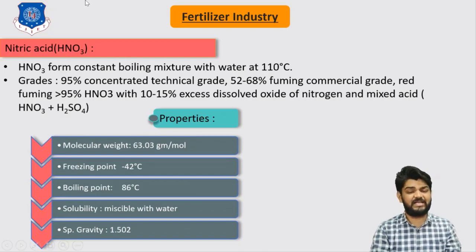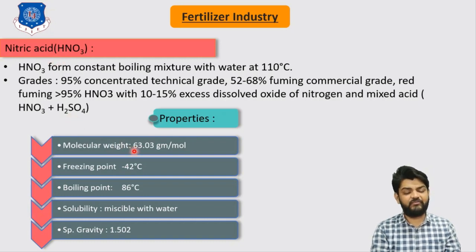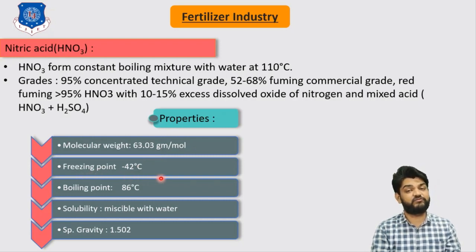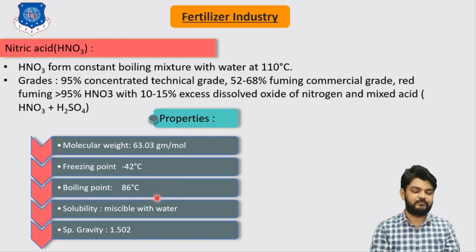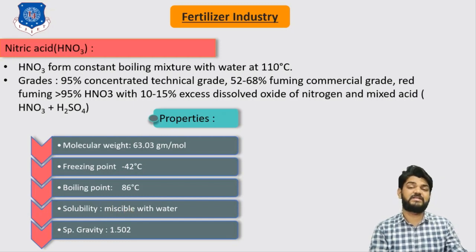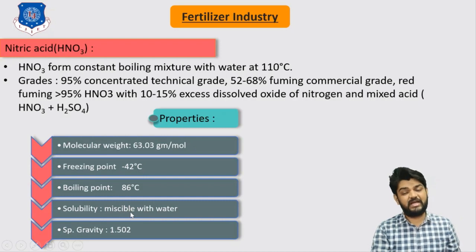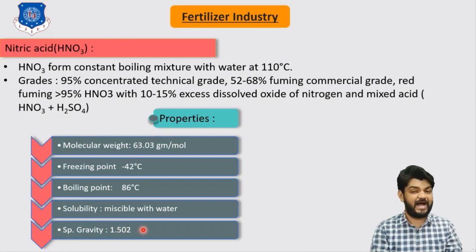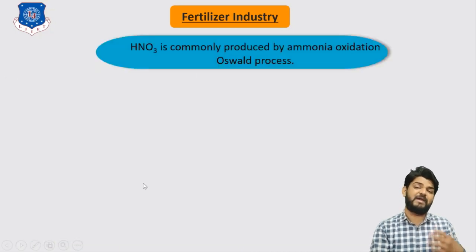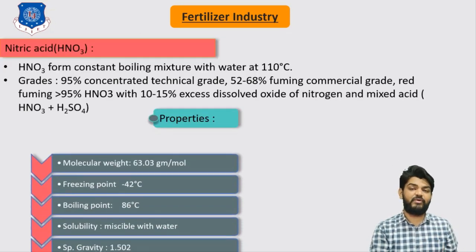The properties of nitric acid: its formula is HNO₃ with molecular weight 63.03 g/mol. Freezing point is around -42°C and boiling point is 86°C. It is very miscible with water, though this mixing is exothermic. Specific gravity is around 1.502.